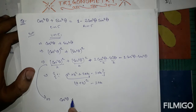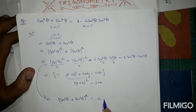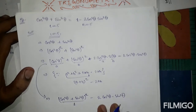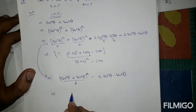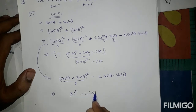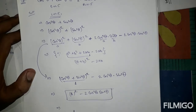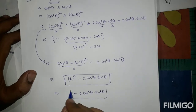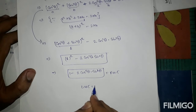We rewrite this as (cos²θ + sin²θ)² - 2cos²θ·sin²θ. Since sin²θ + cos²θ = 1, this becomes 1² - 2cos²θ·sin²θ, which equals 1 - 2cos²θ·sin²θ. This is our RHS, so LHS = RHS, hence proved.